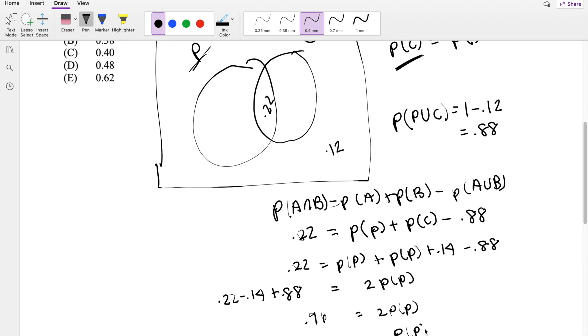So the probability that they visit a physical therapist is 0.96 divided by 2, which is equal to 0.48, our answer D.